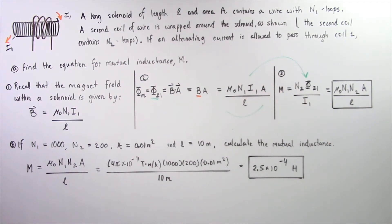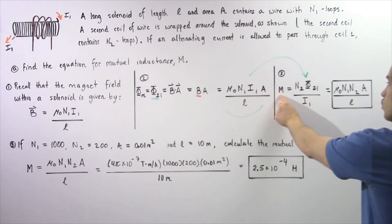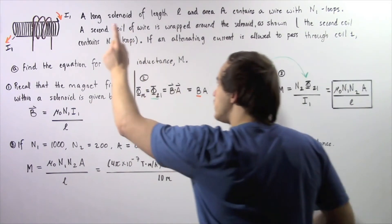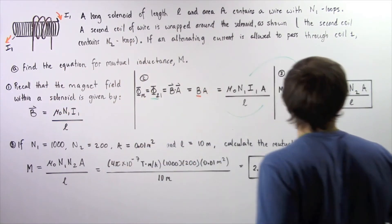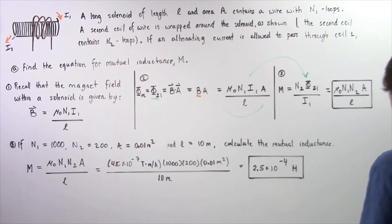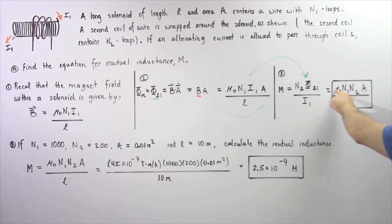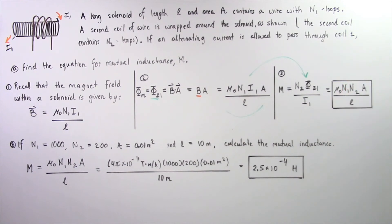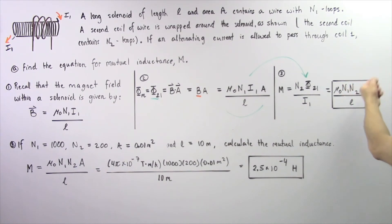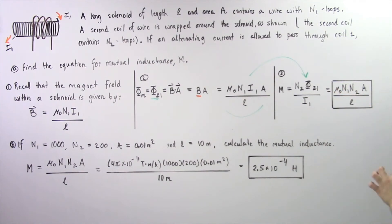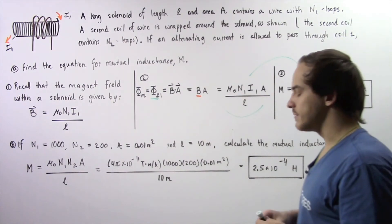Notice that I1 appears in both the numerator and denominator, so we can cancel the I1's. We find that the equation for the mutual inductance of coil 2 as a result of the solenoid is given by: the permeability of free space mu-naught, multiplied by N1 times N2 times A — the cross-sectional area of the solenoid — divided by L, the length of that solenoid.